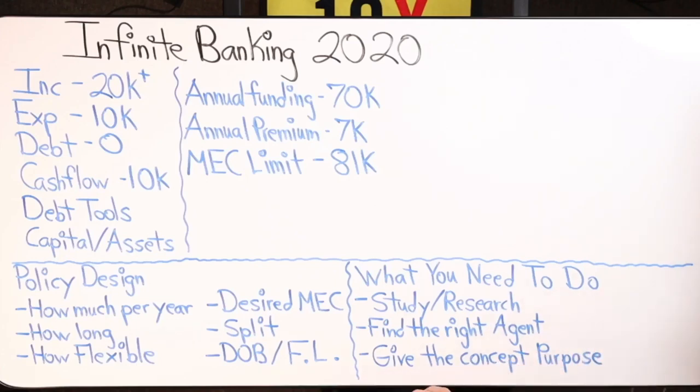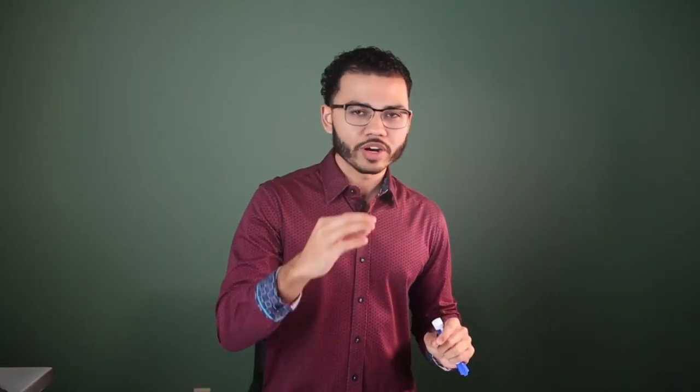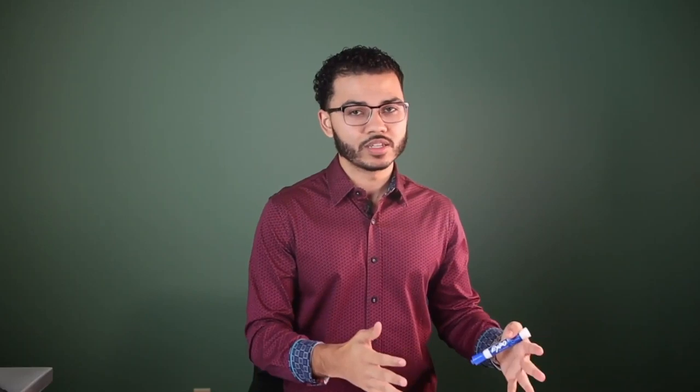The next thing I want you to do is give the concept purpose — know exactly what you want to do with the infinite banking concept. For example, personally I'm funding two policies through my cash flow and velocity banking. I then use these policies as a place to park my saved money. Out of my total income I'm saving 40% and I park it in tax-free life insurance through infinite banking — that's one purpose.